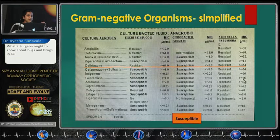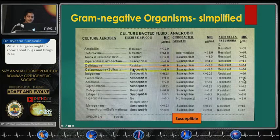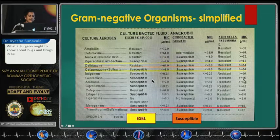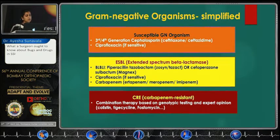Let's look at gram-negative organisms simplified. Starting with a third-generation cephalosporin like ceftriaxone as the prototype — if susceptible, you are dealing with a susceptible organism. If beta-lactam/beta-lactamase inhibitor combinations (BLBLIs) like piperacillin-tazobactam or cefoperazone-sulbactam are susceptible but the third-generation cephalosporin is resistant, you are dealing with an ESBL or extended-spectrum pathogen. If meropenem is also resistant, you have a carbapenem-resistant pathogen. For susceptible organisms, use a third-generation cephalosporin. For ESBL pathogens, use BLBLIs like piperacillin-tazobactam or a carbapenem for high inoculum infection, incomplete source control, or very sick patients. For carbapenem-resistant organisms, you need expert opinion.